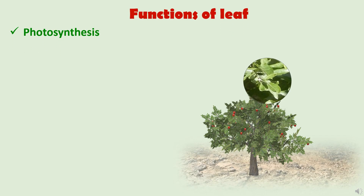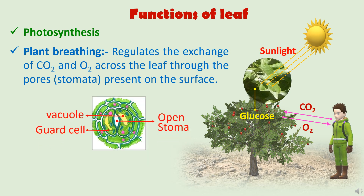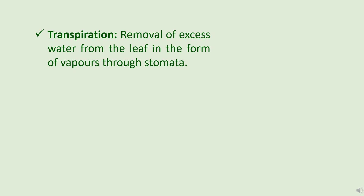Functions of the leaf. Leaves help in the process of photosynthesis, where light energy is converted into chemical energy, and the products synthesized during photosynthesis are utilized by the plant during various metabolic activities. Leaves help in regulating the exchange of gases across their surface through pores called stomata. Stomata are guarded by two kidney-shaped guard cells that have large vacuoles, which help in regulating the opening and closing of the stomata. Leaves also help in purification of air — they absorb carbon dioxide released by animals and use it to produce sugars during photosynthesis. Plants utilize very small amounts of water, and surplus water is removed — this removal of excess water from the leaf in the form of vapors through stomata is called transpiration.